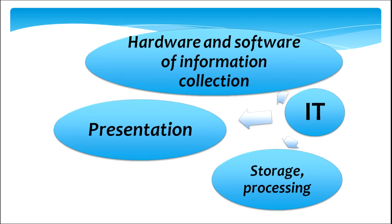IT involves hardware and software of information collection. Hardware would mean the tangible instruments that we make use of — for example, computers, floppy disks, compact disks, USB ports. Software would be the programs that you use for information collection — for example, you make use of a browser to collect information from the network. This information that you collect is used for presentation, storage, and processing — that means working on it.